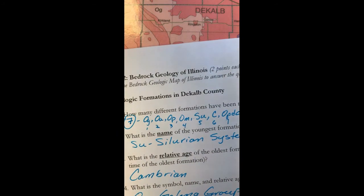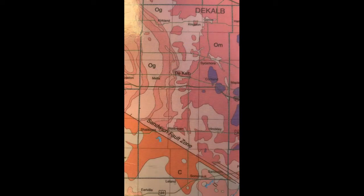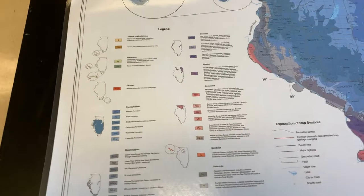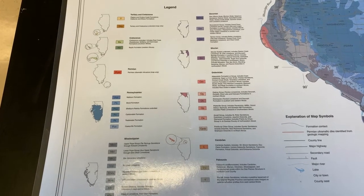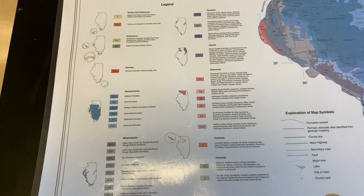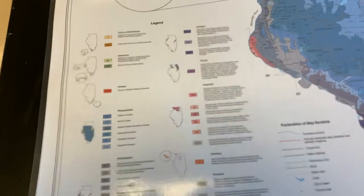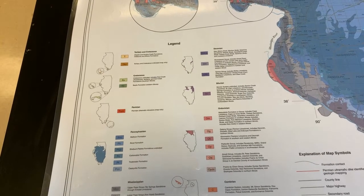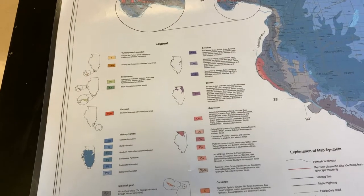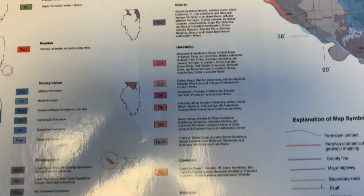The seven formations are OG, OA, OP, OM, SU, C, and OPDC. The next question asks what is the name of the youngest formation in the county. For that we go to the legend at the bottom left corner of the map. The legend tells us the relative age and also the names of the formations. Our formations go from OPDC, C, SU, OM, OA, OG — listed from youngest to oldest.